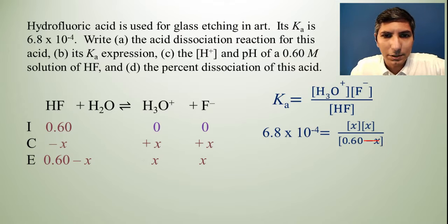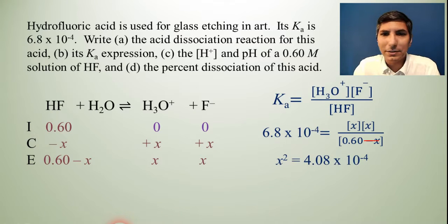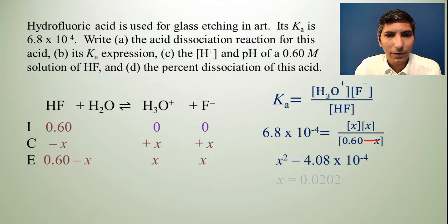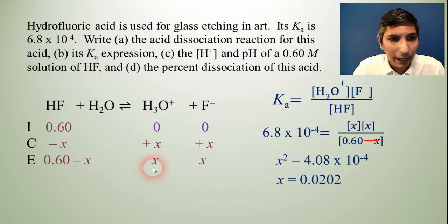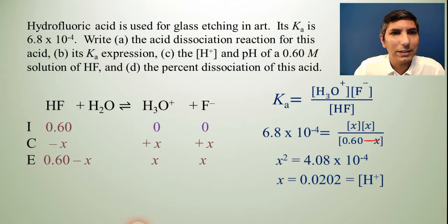So now we can cross multiply. X times X is X squared. 0.6 times the Ka value gets us 4.08 times 10 to the negative fourth. So to solve for X, I take the square root and I find that X equals 0.0202. And according to the problem, the X value is equal to the hydronium concentration. So that's my first part of question C.